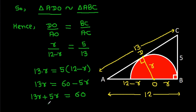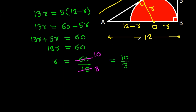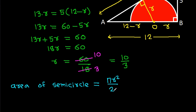So 13R equals 60 minus 5R, which gives 18R equals 60. Therefore R equals 60 over 18, which simplifies to 10 over 3. The area of the semicircle will be pi R squared over 2, so it is pi times (10/3) squared over 2, which gives 50 over 9 times pi.